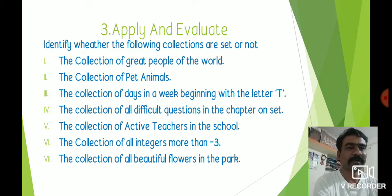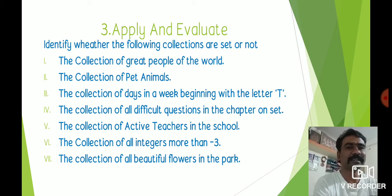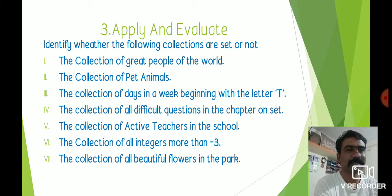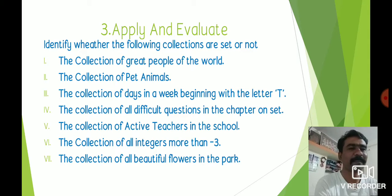'Collection of all integers more than -3' — which objects should be included is clear: numbers more than -3, which can be written as -2, -1, 0, 1, 2, 3, and so on. The list is unique, so this collection of all integers more than -3 is a set. 'Collection of all beautiful flowers in the park' — 'beautiful' is not clear, so the collection of beautiful flowers in the park is not a set.